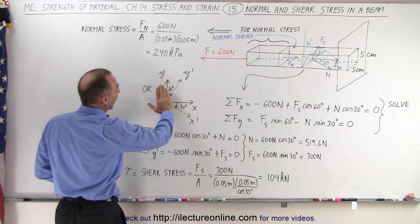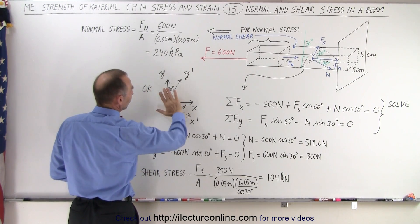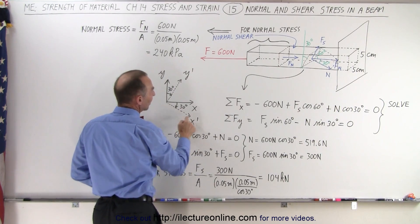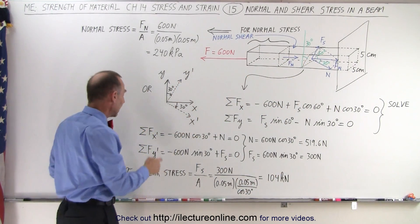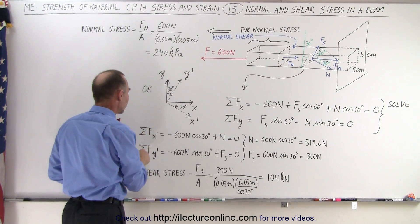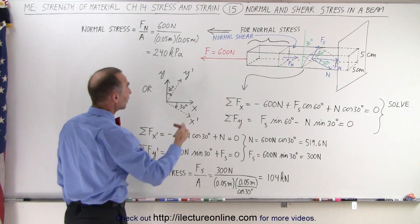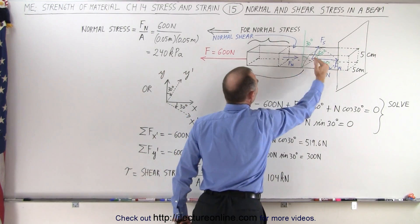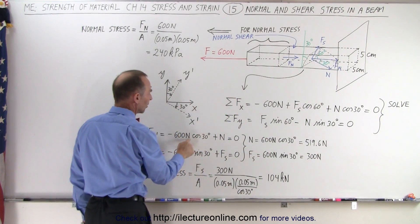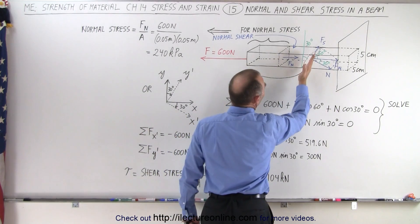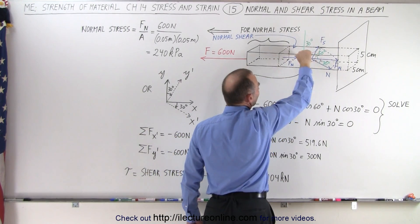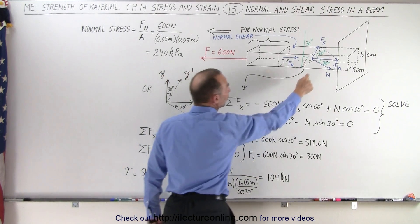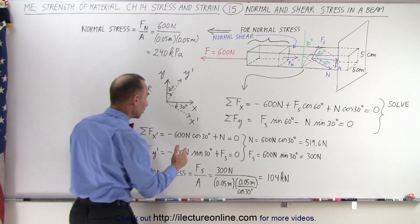Alternatively, we can rotate our axes so that the y' axis is parallel to the slanted surface and the x' axis is perpendicular to the slanted surface. Adding up all the forces in the x' direction: the 600 N force multiplied by cosine of 30 degrees gives the perpendicular component to the slanted surface, so it's minus 600 times cosine of 30. Since the shear force is parallel to the surface, it has no perpendicular component. We only add the normal force, which is completely perpendicular to the surface, and those two together add up to zero.